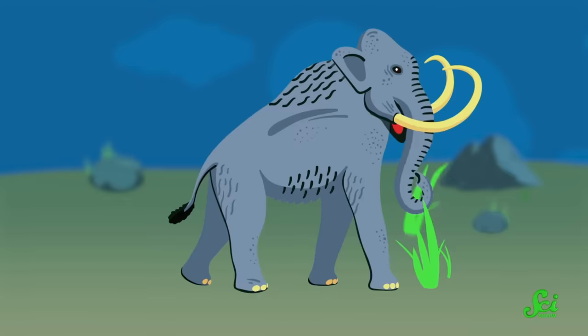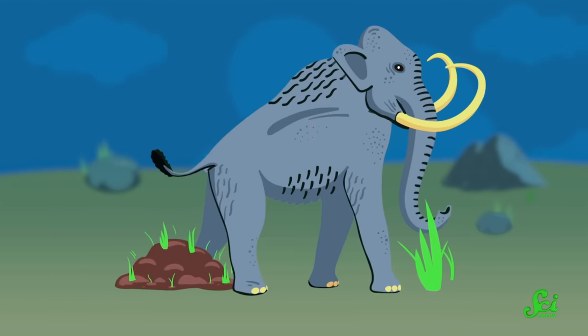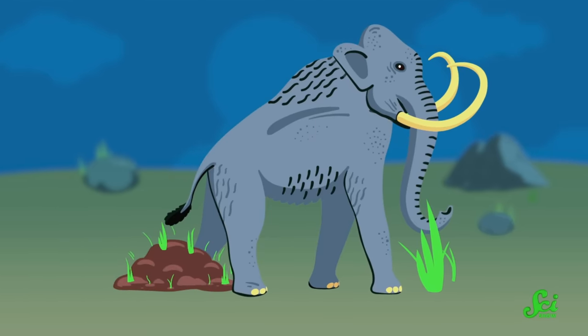So let's begin at the beginning. Where did this idea that the giant ground sloths spread the avocado even come from? Well, it all starts in the 1980s with a paper posing a new hypothesis about Costa Rican plants. It essentially said we should think about big animals as dispersers of seeds, which was a good idea, honestly.